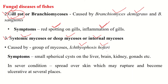This fungus is usually found in marine fishes but is also pathogenic to salmon-type freshwater fishes. The symptoms include small spherical cysts on the liver, brain, kidney and gonads. In severe conditions, they can spread over the skin, which may rupture and become ulcerative at several places.